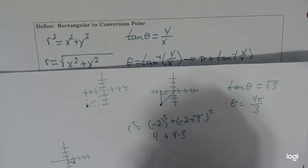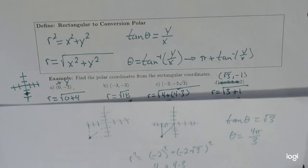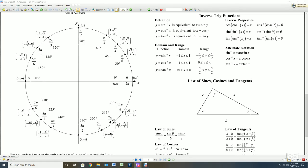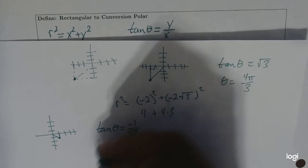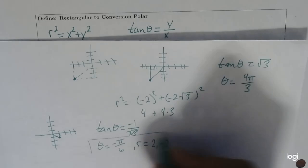Now finding theta: theta is going to equal negative 1 over radical 3. Since we're in quadrant 4, it's going to be one of those angles there. It looks like it's this one, but technically it's not 11π/6 — because if you add pi to that, it doesn't give you that. So you have to go the opposite direction, just like we did the first one, so this is going to be negative π/6. So theta is equal to -π/6, and the r values are going to be 2 and negative 2.